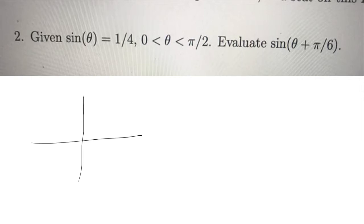So we're going to draw a right triangle in the first quadrant. This is theta. We know that sine theta is 1/4. Sine is opposite over hypotenuse. So opposite is 1, hypotenuse is 4, and we're going to do the Pythagorean theorem.